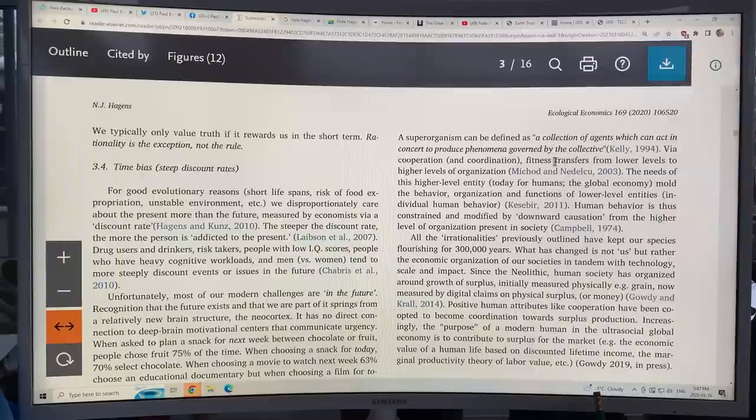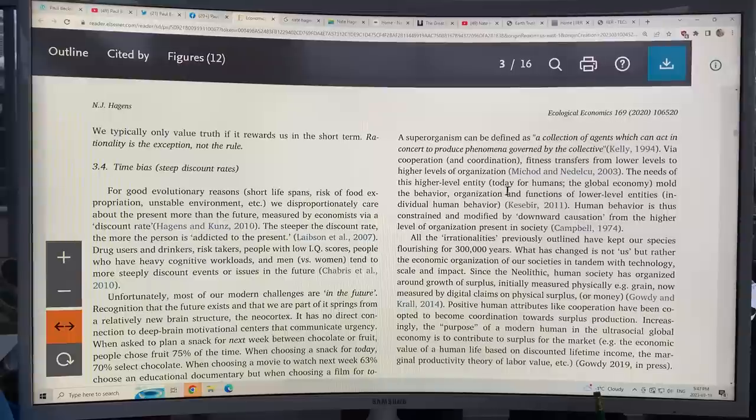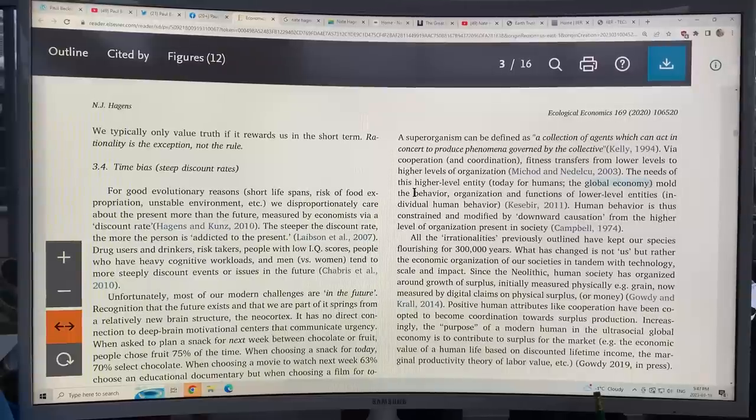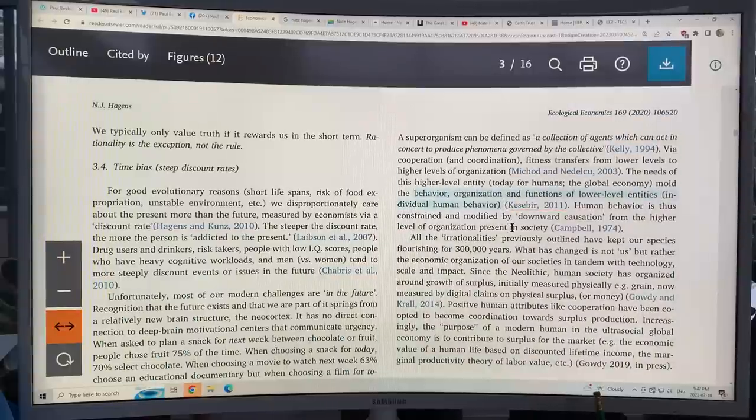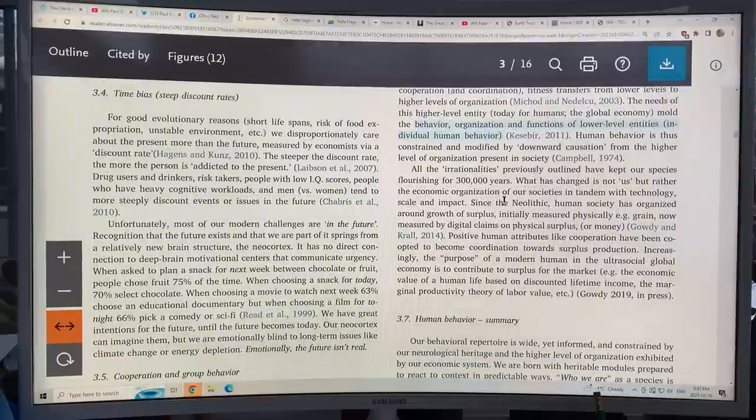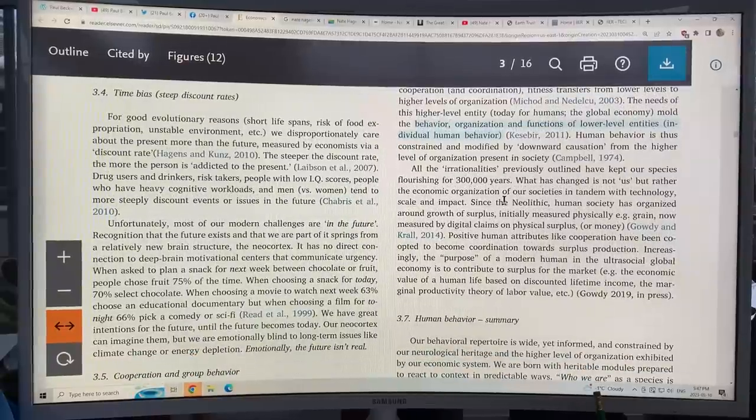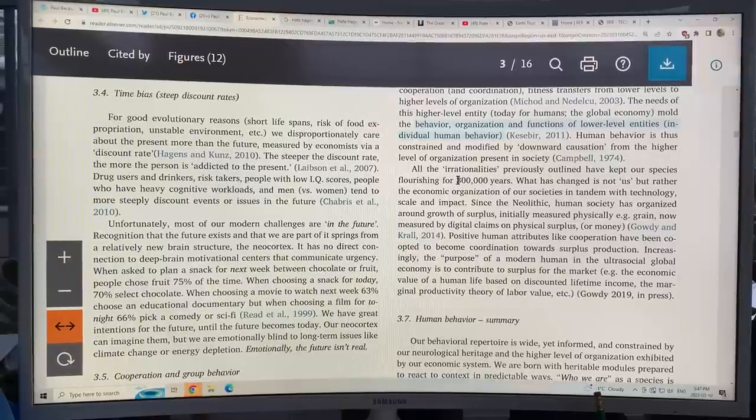This is a collection of agents which can act in concert to produce phenomena governed by the collective. The needs of this higher-level entity, the superorganism, for humans, it's a global economy. This molds behavior, organization, and functions of lower-level entities, including individual human behavior. Thus, we're constrained and modified by downward causation from the higher level of organization present in society.